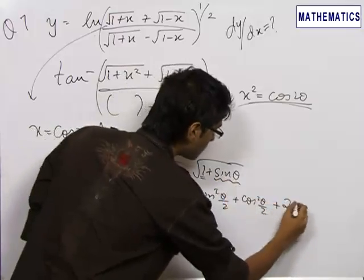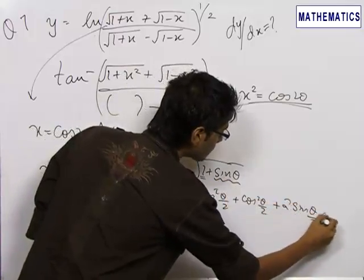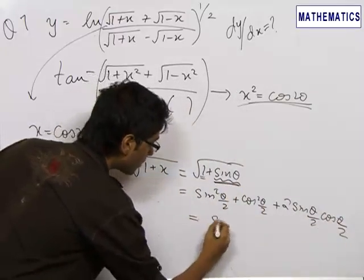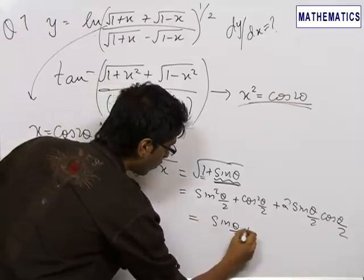And we write this sin θ as 2 sin(θ/2) cos(θ/2), breaking this sin θ into half angle. This becomes [sin(θ/2) + cos(θ/2)]².